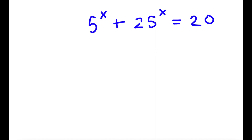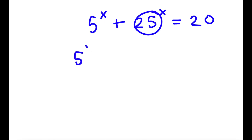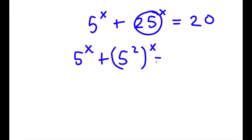So in this problem, I have 5 to the power of x plus 25 to the power of x is equal to 20. To solve this, I'm going to first rewrite 25 as 5 squared. So now I have 5 to the power of x plus 5 squared to the power of x is equal to 20.